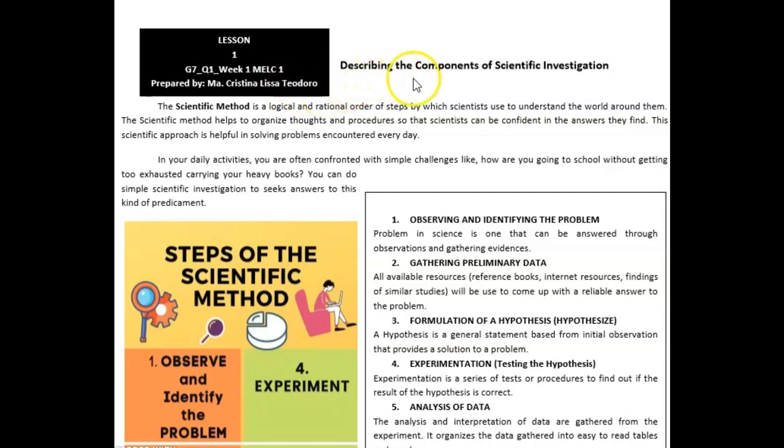The title of our module is Describing the Components of Scientific Investigation. As you can see here, there is a brief introduction about scientific method. All you have to do is to read it and understand it. If you have any questions or clarification, you can call, text, or private message your science teacher.